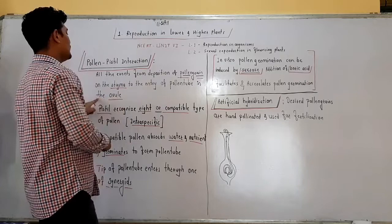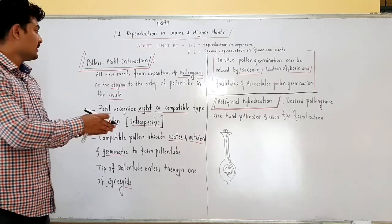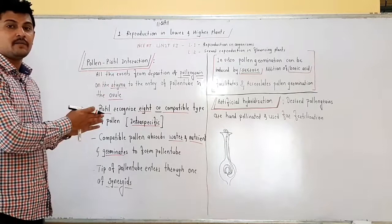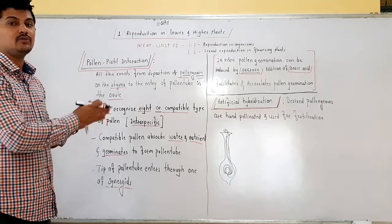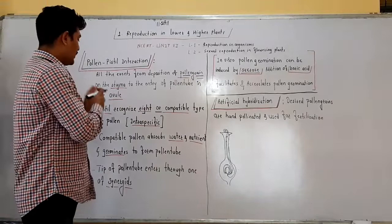Pollen-pistil interactions include the events from the deposition of the pollen grain over the stigma, then the formation of the pollen tube, then the pollen tube is attracted by the synergids, and through one of the synergids the pollen tube enters into the ovule and performs the process of fertilization. Pollination transfers the pollen grain from the anther to the stigma of the flower.